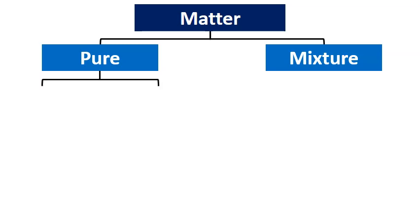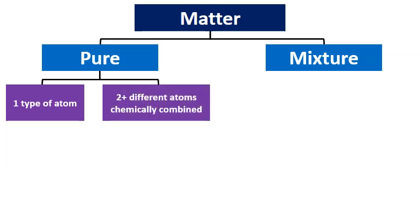Let's focus on pure first. In pure substances, we've got two basic kinds: pure substances made of one type of atom, and substances made of two or more different atoms chemically combined.